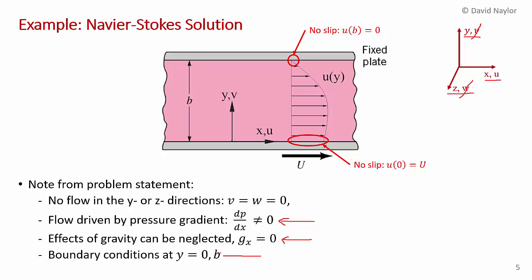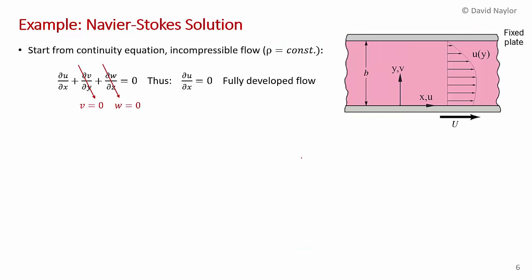The boundary conditions are implicit in the problem. Because of the no-slip condition, the fluid sticks to the upper surface, which is fixed — so at y = B, u = 0. Similarly, at the lower plate at y = 0, u equals the velocity of the plate, which is the given uppercase U. With the boundary conditions identified, we can now start from the continuity equation.